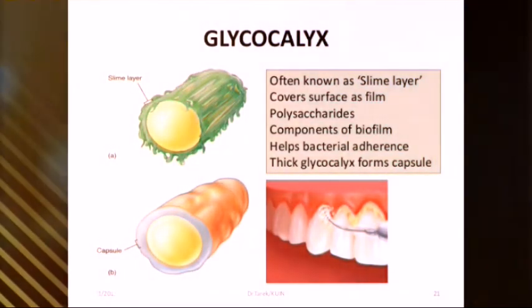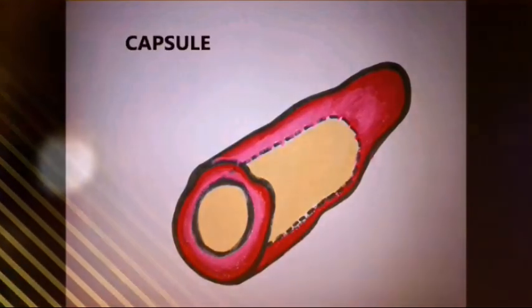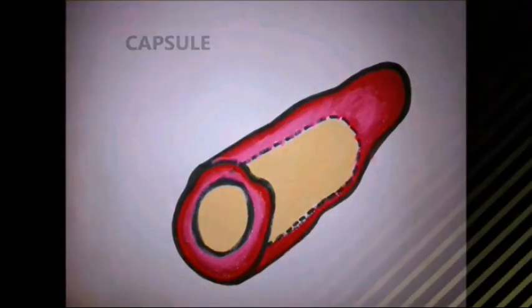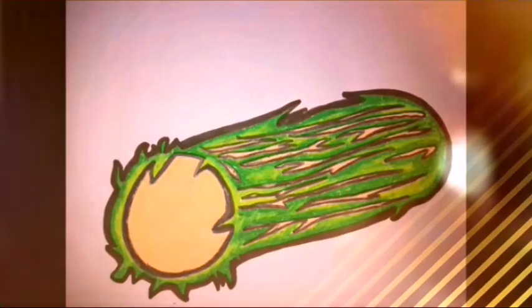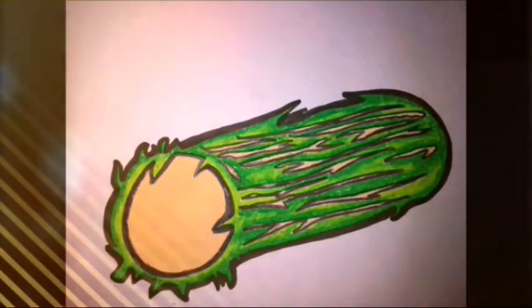The glycocalyx is a type of identifier that the body uses to distinguish between its own healthy cells and transplanted tissues, diseased cells, or invading organisms.